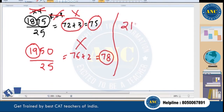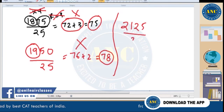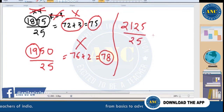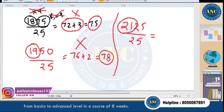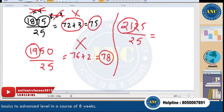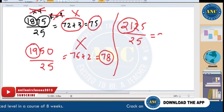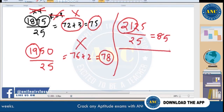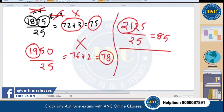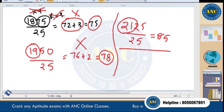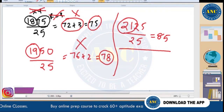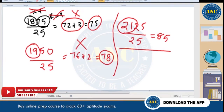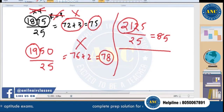Now for larger numbers — 2125 ÷ 25: last two digits 25 means remainder 1; remaining number 21; 21 × 4 = 84, plus 1 = 85. Answer is 85. Many members gave the correct answer of 85.